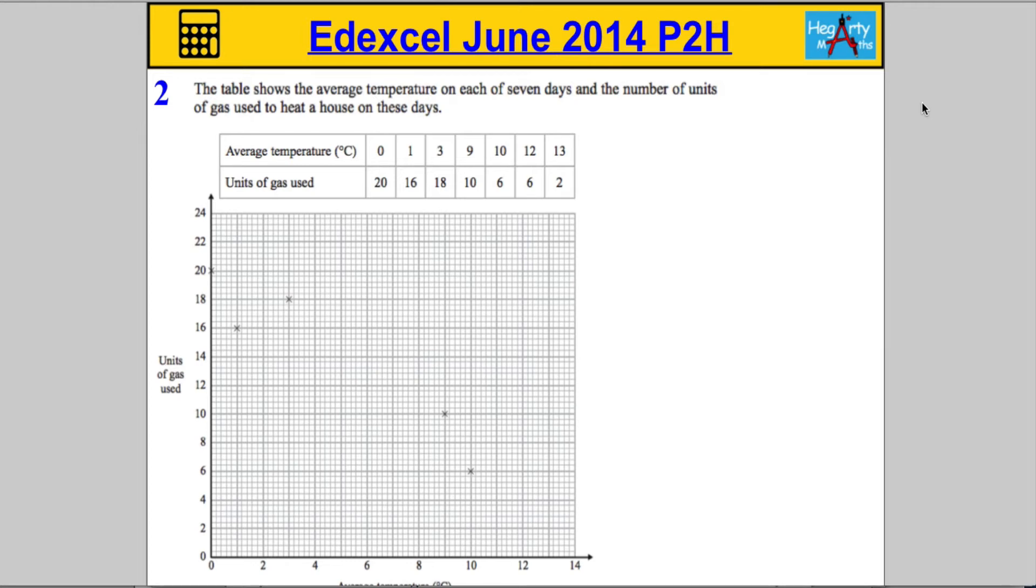Okay, so question two is a standard scatter diagram question. We're told that the table shows the average temperature on each of seven days and the number of units of gas used to heat a house on these days.